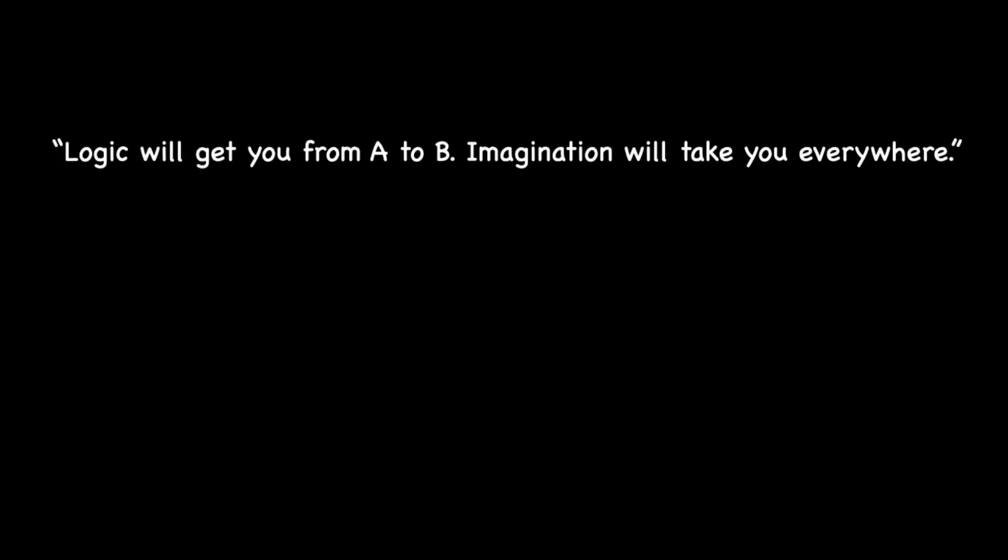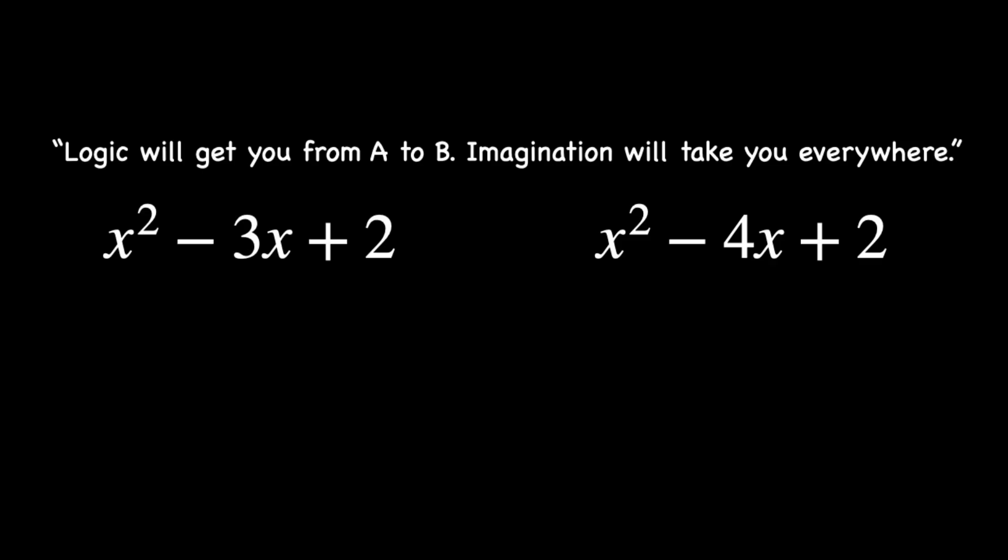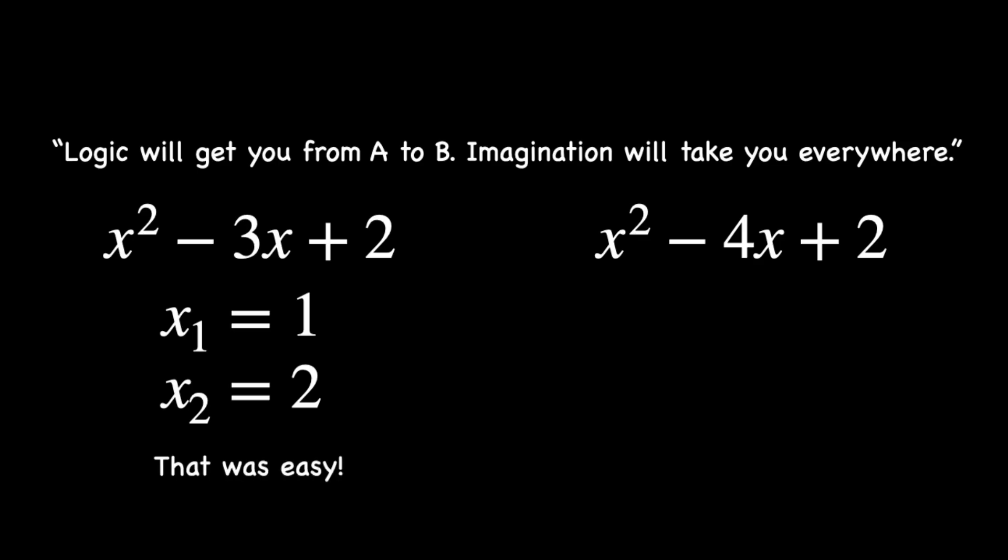Have you ever noticed how sometimes two seemingly similar math problems can have drastically different solutions? Take these two quadratic equations: x squared minus 3x plus 2, and x squared minus 4x plus 2. They look almost identical, but if we try to find their solutions using only rational numbers, we run into a surprising difference. The first one is easy to factor: x minus 1 times x minus 2, so the solutions are 1 and 2, both perfectly good rational numbers.